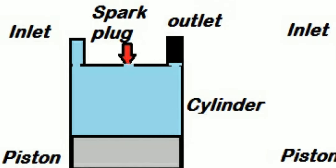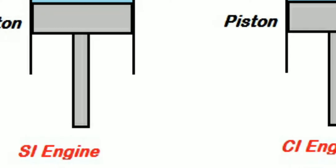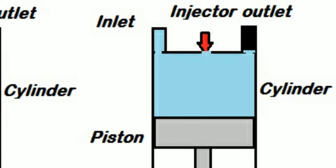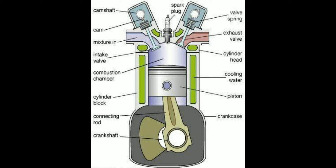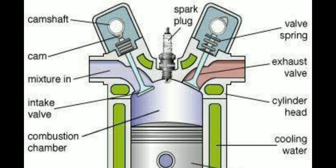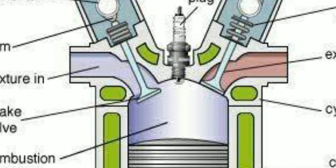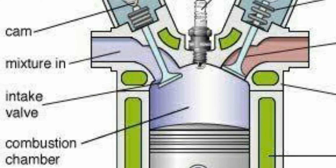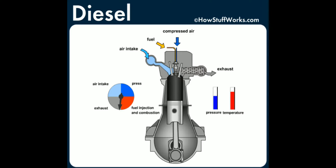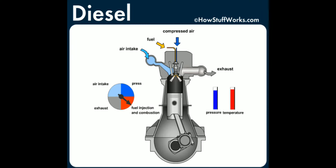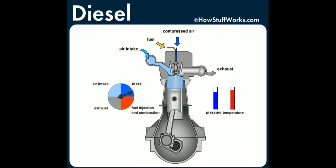On the left hand side you can see the spark plug, that is called the SI engine, but in the case of the diesel engine the injector is present, so it is called the diesel engine or CI engine. In this picture you can see the petrol engine or SI engine — the spark plug is present. From the inlet valve, an air-fuel mixture comes in, but in the case of the diesel engine only air comes into the engine. You can see the compressed air coming into the inlet, then the fuel is injected by an injector, so it is called a compression ignition or diesel engine.